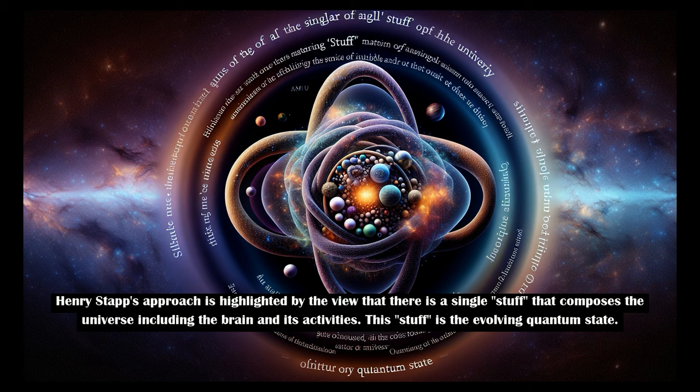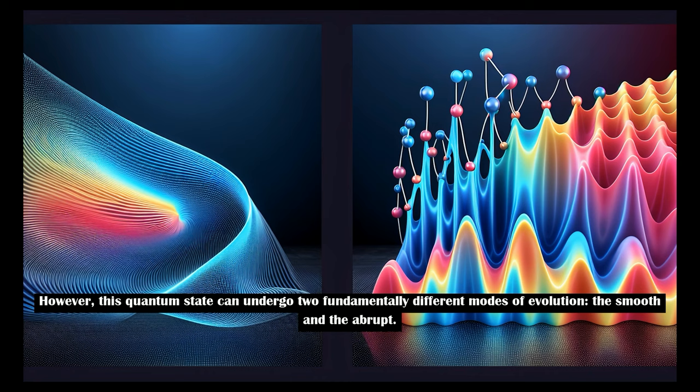Henry Stapp's approach is highlighted by the view that there is a single stuff that composes the universe, including the brain and its activities. This stuff is the evolving quantum state.